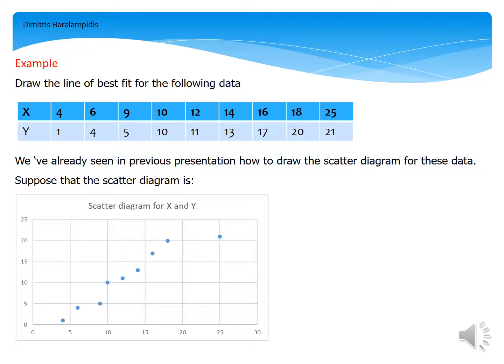we have the values of 4, 6, 9, and so on, while for the variable Y, we have the corresponding values of 1, 4, 5, and so on. We have already seen in previous presentation how to draw the scatter diagram for this data.